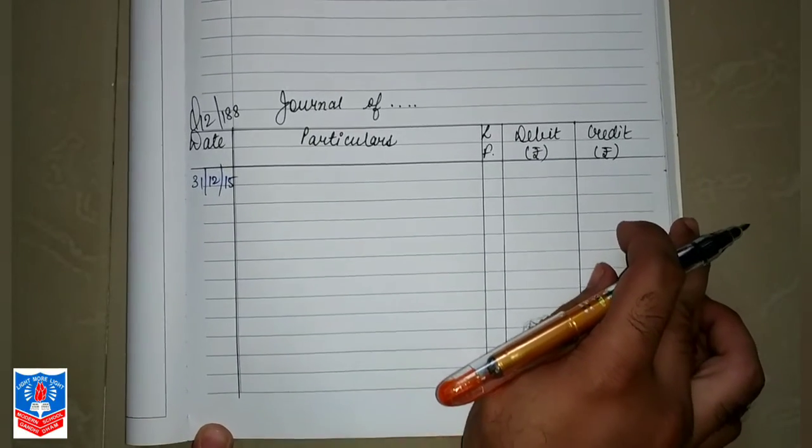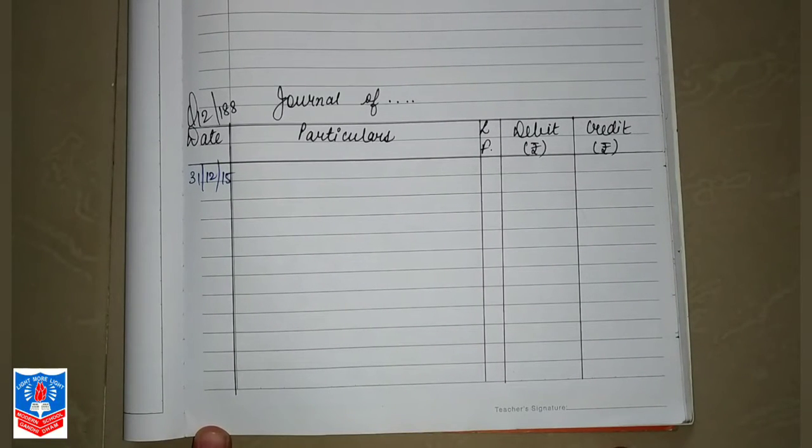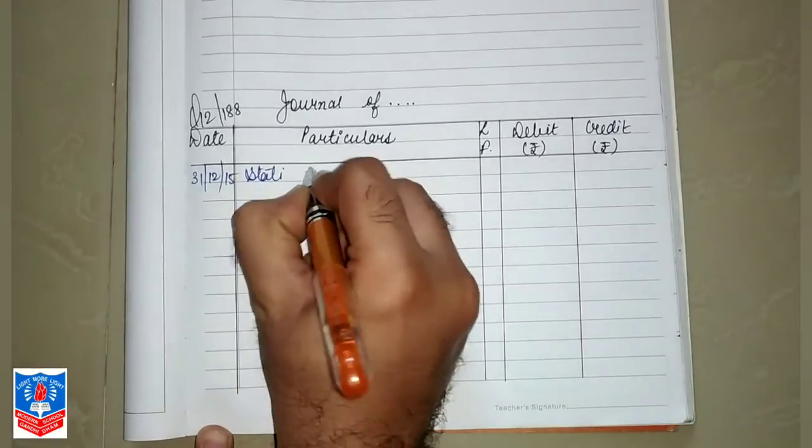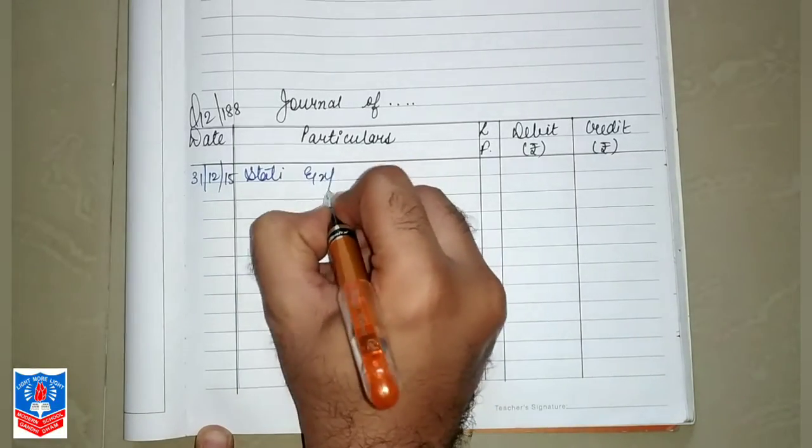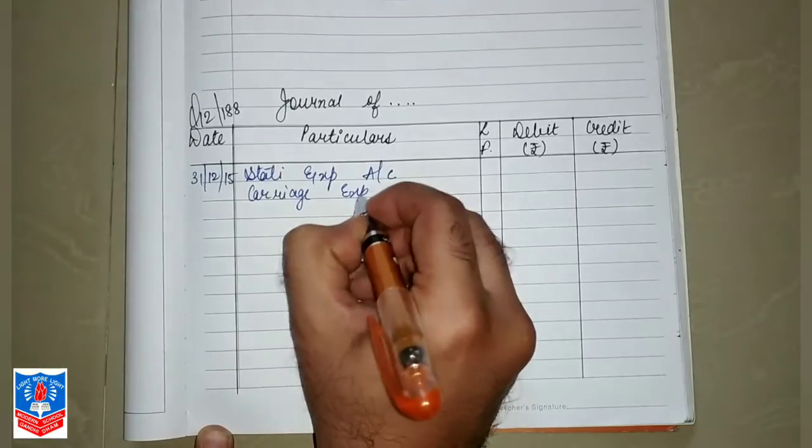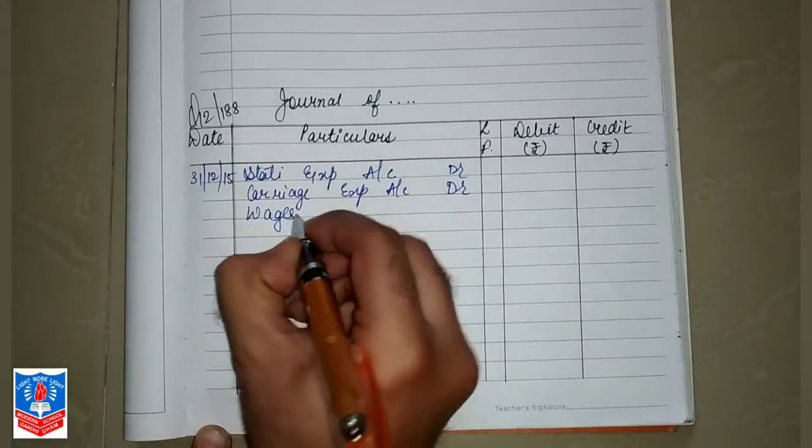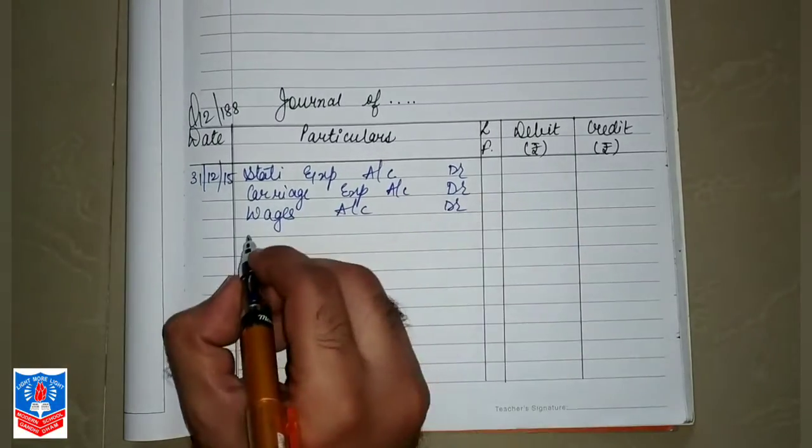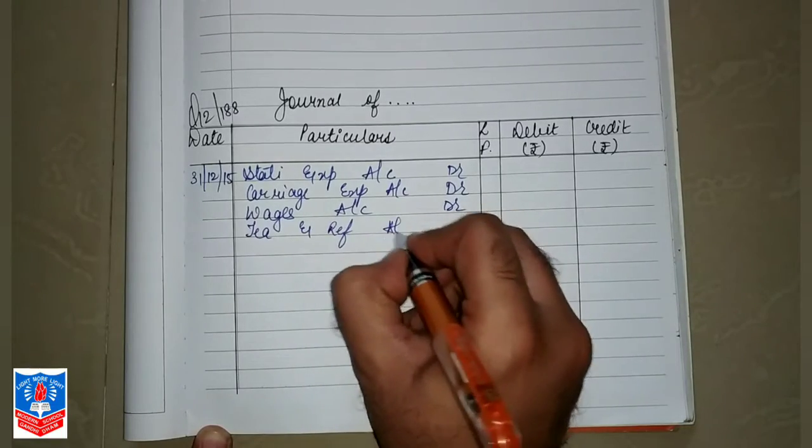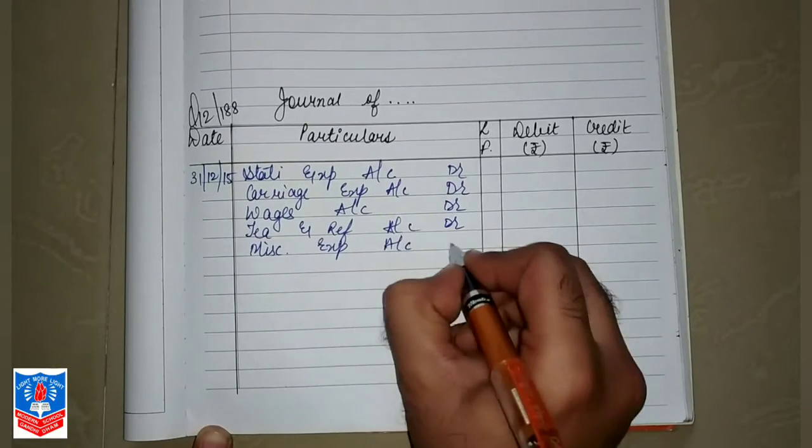On date 31-12-2015, what is the nature of all these type of expenses? Expenses ka nature debit hota hai. So all the expenses which are mentioned in your textbook, we will debit them. That is stationary expenses account debit, next is carriage expense account debit, next wages account debit. All the expenses have debit nature, so we are debiting them on the last date. Tea and refreshment account debit, and the last is miscellaneous expense account debit.